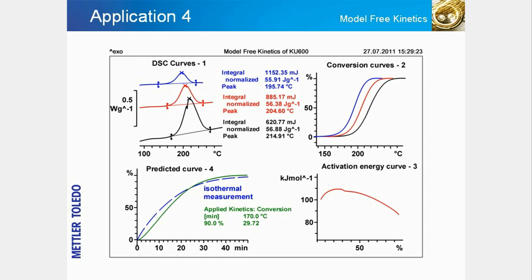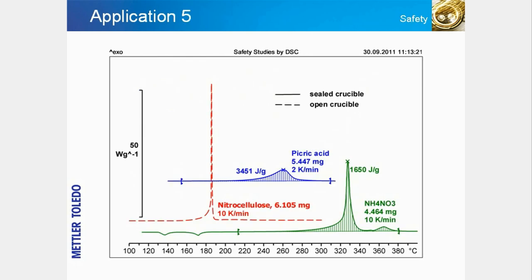This prediction was checked by performing an isothermal measurement at 170 degrees and overlaying the measured and predicted curves — the two curves match very closely. To safely process and store chemicals, it is important to know the temperature at which they start to react, the reaction rate, and the energy released. The safety measures that have to be taken when processing or storing a particular substance can then be assessed.